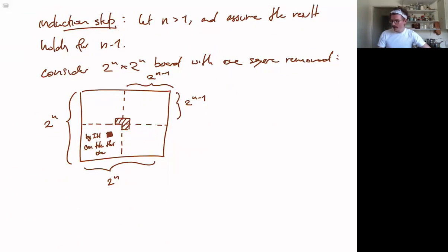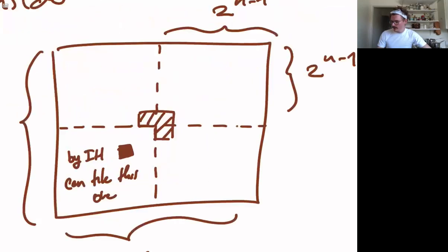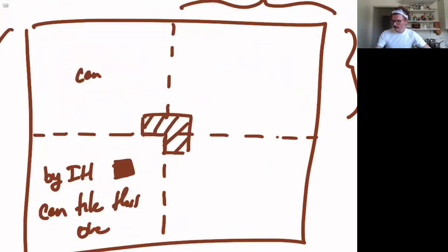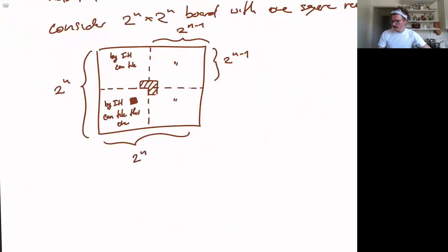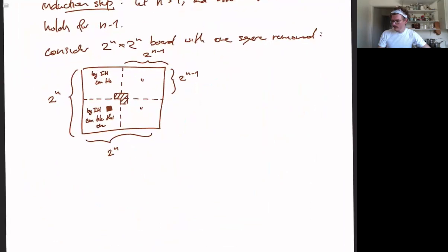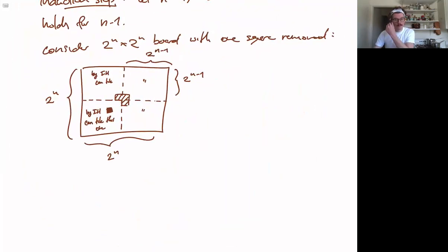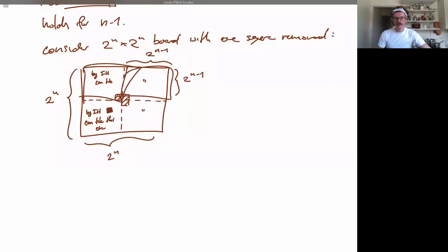And so then, with this placed, you can tile this one by induction hypothesis. And again, and again. Aha! And so now, since we have tiled each of these quadrants, well, that accounts exactly for all the squares of our checkerboard.